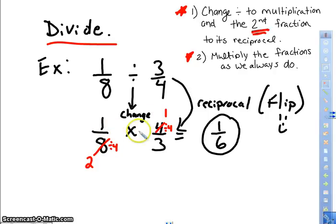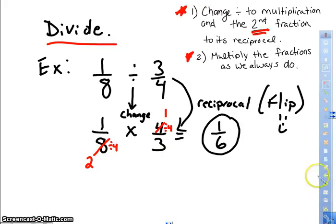So 1/8 times 4/3. I can cross-reduce the 8 and the 4 by 4, and I get 1 and 2. And then 1 times 1 is 1. 2 times 3 is 6. I can't reduce it, and I get 1/6. Remember, you do not have to cross-reduce if you don't want to. I'm just going to take some of the simplifying out of your answer.